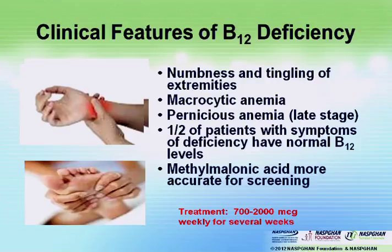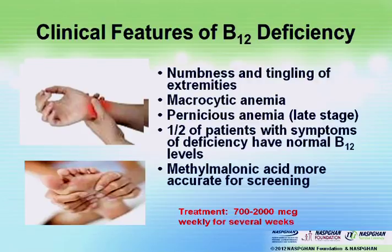Moving from thiamine to B12 — B12 deficiency can also be very subtle. You think about looking for macrocytic anemia, but a patient may just tell you they have numbness and tingling in their extremities. They might have macrocytic anemia, they may not. About half of patients with symptoms of deficiency will have normal B12 levels. It's really important to keep in mind that you probably should use methylmalonic acid and homocysteine to screen for it. The key is that these are vague symptoms — you'd have a higher index of suspicion with vague symptoms if they have not been compliant, and this is where you want to be the dietary detective.